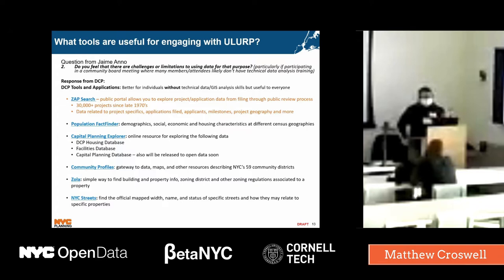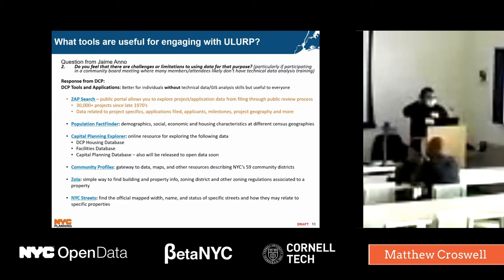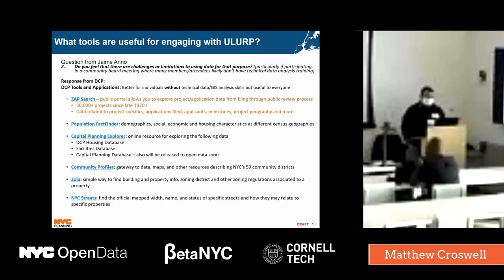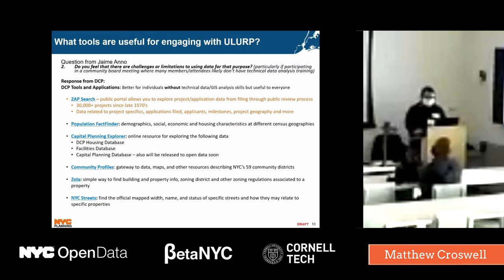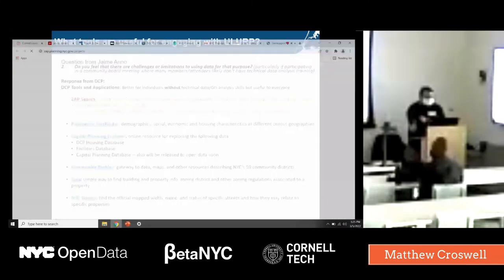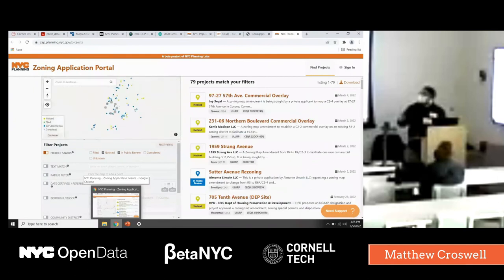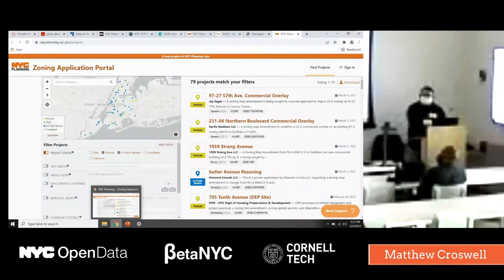If you don't have access to software or lack data analysis training, we make a ton of tools available to help you explore and analyze the data. ZAP Search is an existing portal we have right now. It's a public portal that allows you to explore project and application data from the filing, all the way through the public review process — over 30,000 projects going back to the 1970s. It includes data on project specifics, applications, applicants, project milestones, where a project is in the process, and project geography.